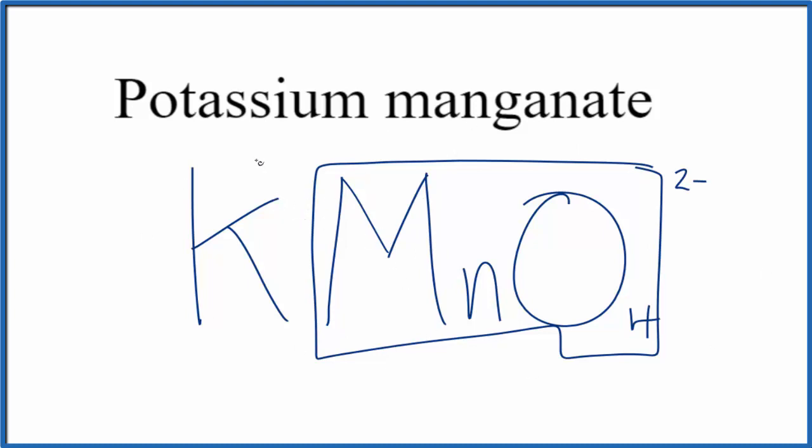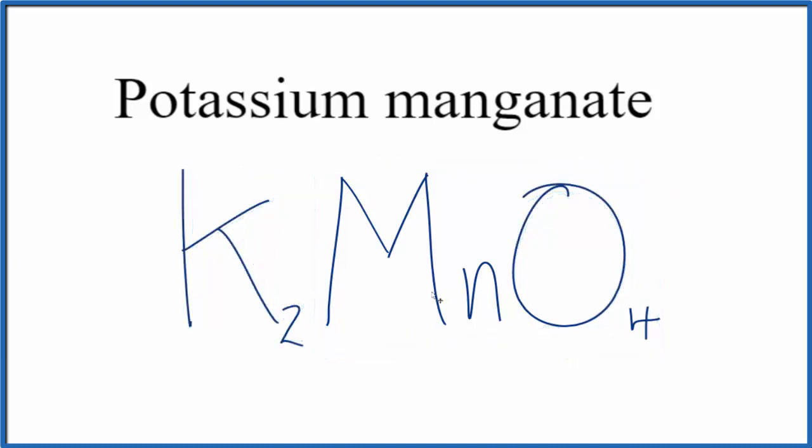Potassium, that's in group 1. It has a 1-plus ionic charge, so we're going to need two potassium ions here to balance the 2- on the manganate ion. That makes this the formula for potassium manganate.